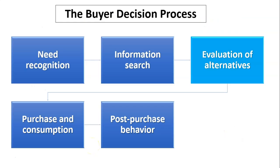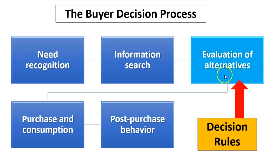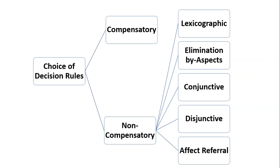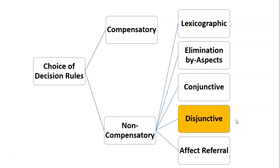To make sense of this, where does the decision rules fit in for consumers? No doubt you've seen the buyer decision process going from need recognition, gathering information, and before we make our purchase decision we evaluate alternatives — the decision rules fit in right here. We have a choice of compensatory, fairly analytical type decision-making, or non-compensatory, which is where we look at selective attributes only. Today we're going to have a look at the disjunctive rule, and keep in mind I have videos explaining all of these rules individually.